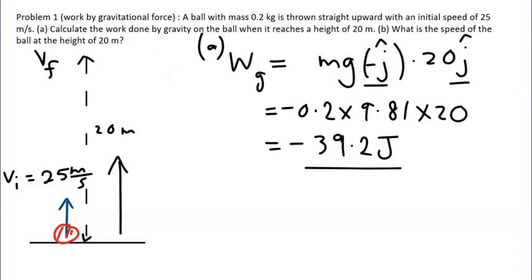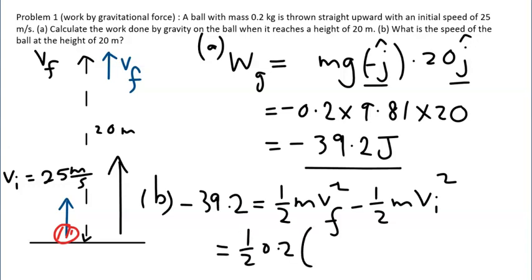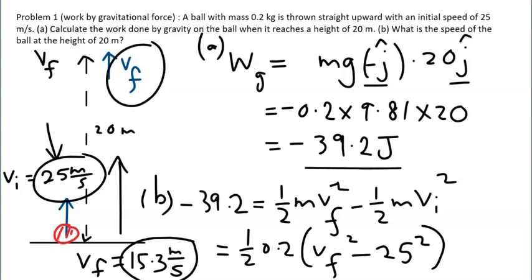Part B: what is the speed of the ball at this height? Using the work-energy theorem, work equals negative 39.2 joules equals the change in kinetic energy: one-half times mass times VF squared minus one-half times mass times VI squared. With mass 0.2 and initial speed VI equal to 25 m/s, solving for VF gives 15.3 meters per second. This is less than 25 m/s, as expected, because the object is slowing down as it moves upward, consistent with the negative work.